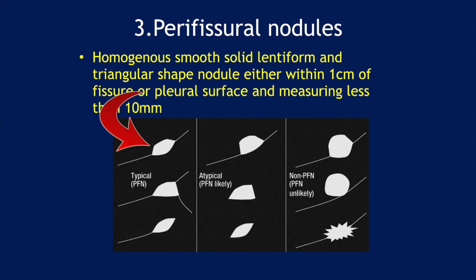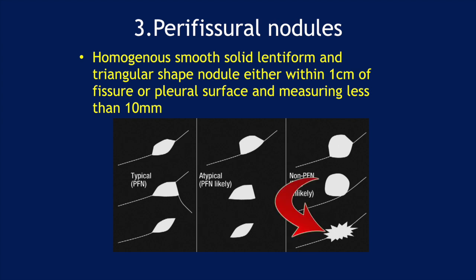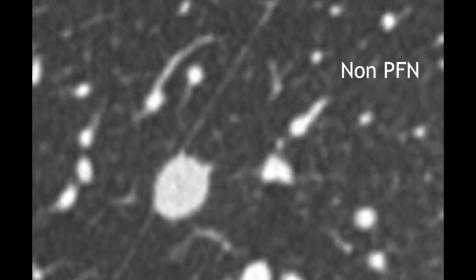This one is lentiform or triangular in shape. These are atypical — they may not be so lentiform or triangular but they are still very small, less than one centimeter. These are the non-PFNs; they are unlikely to be peripheral nodules because they are roundish or spiculated and larger in size. So here is a typical PFN and here is a non-PFN.